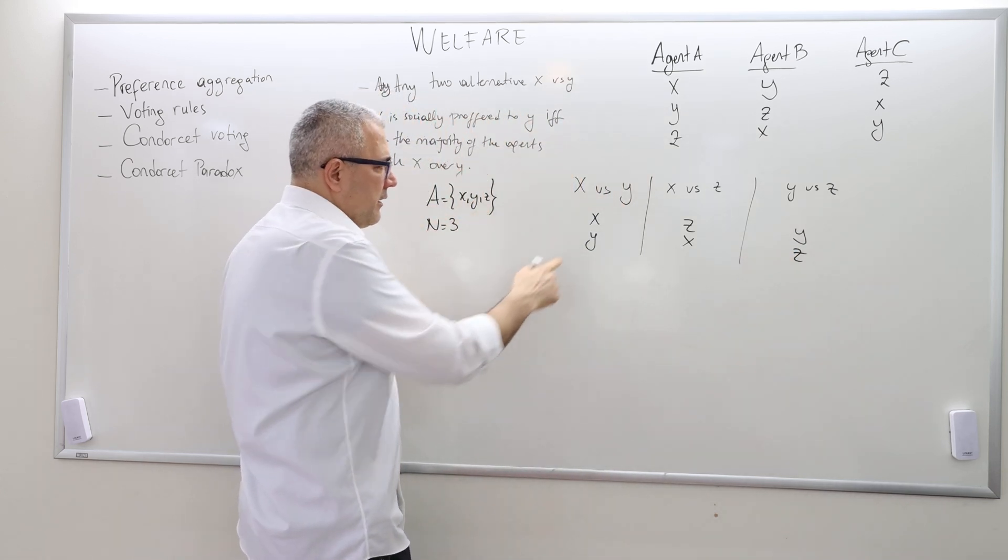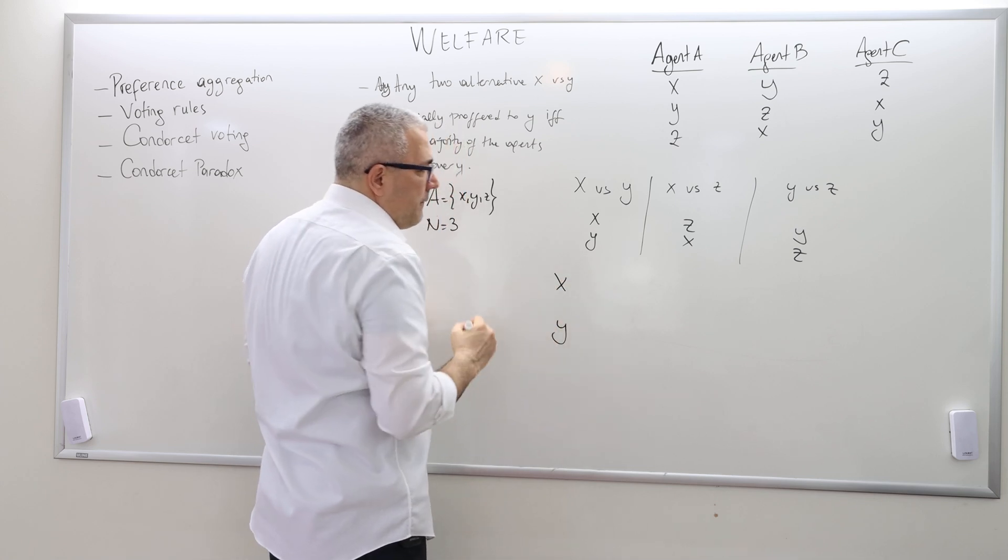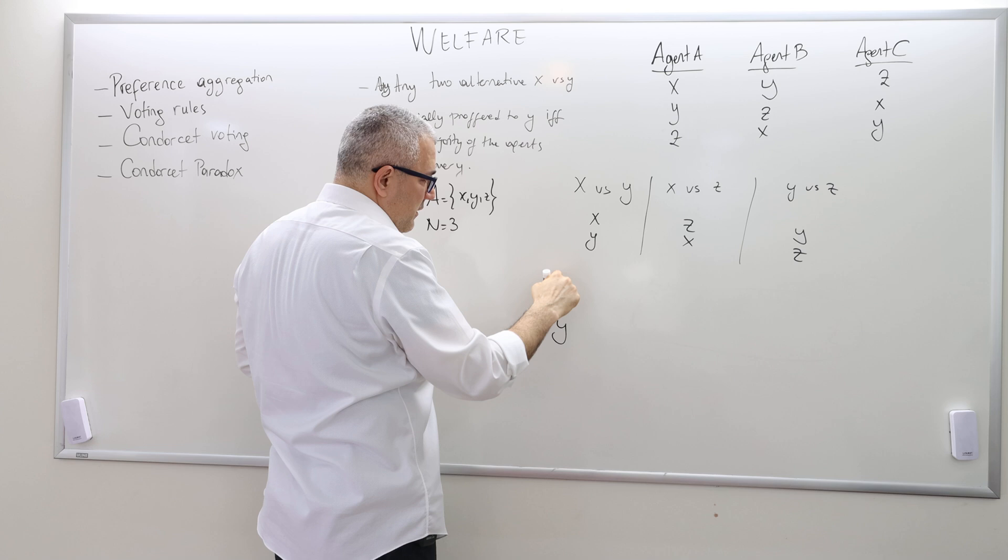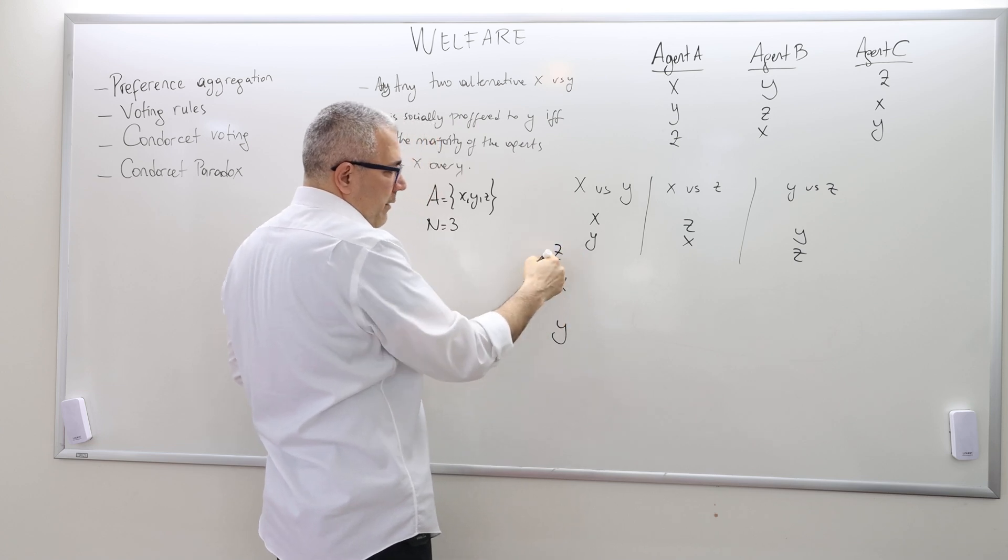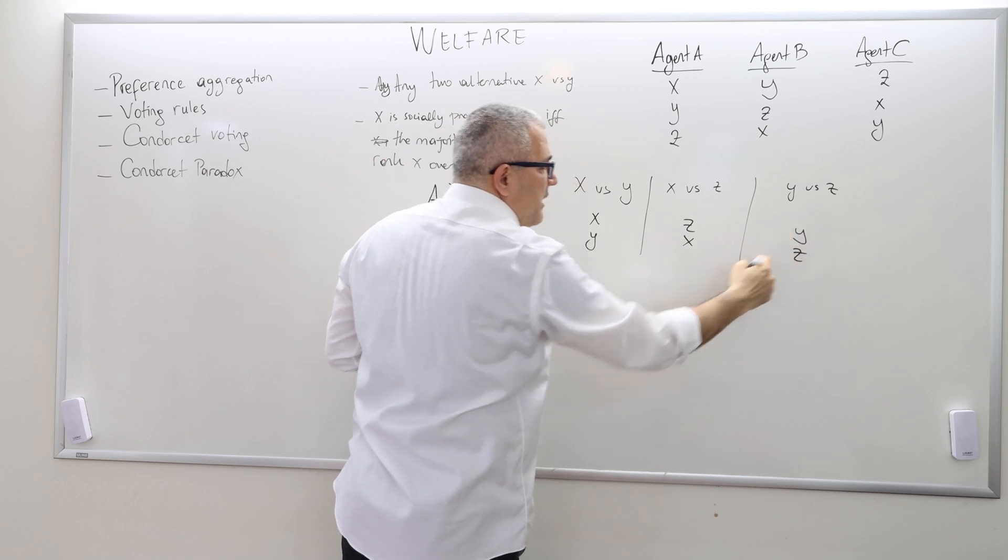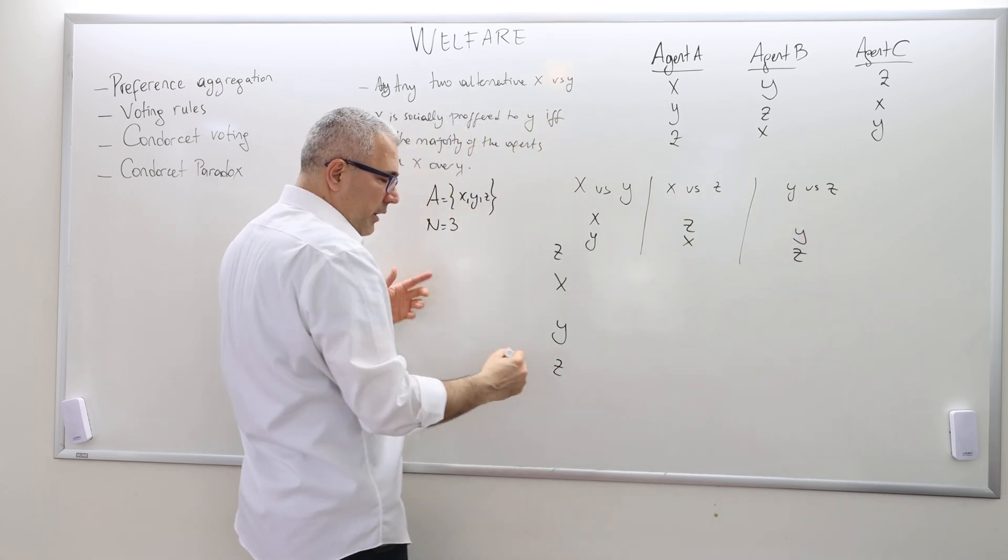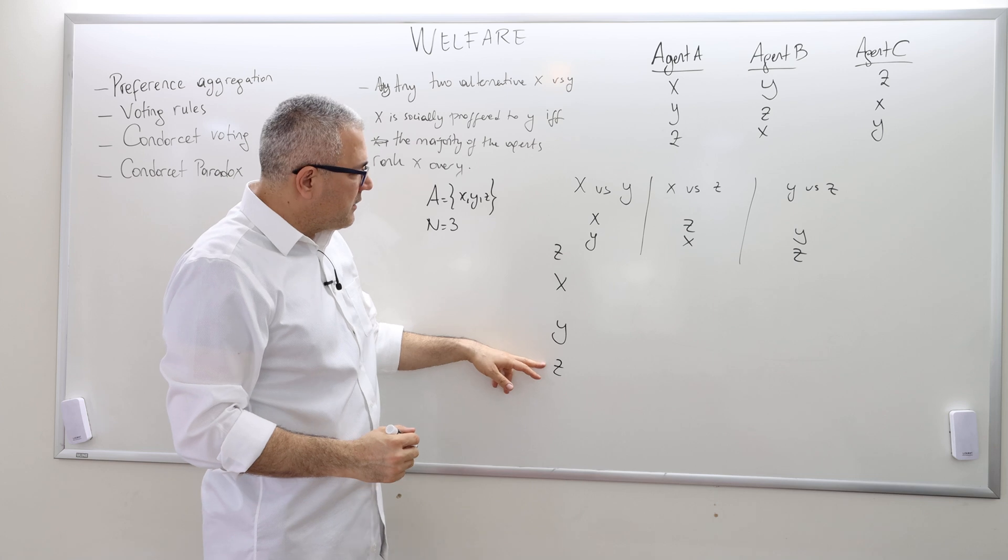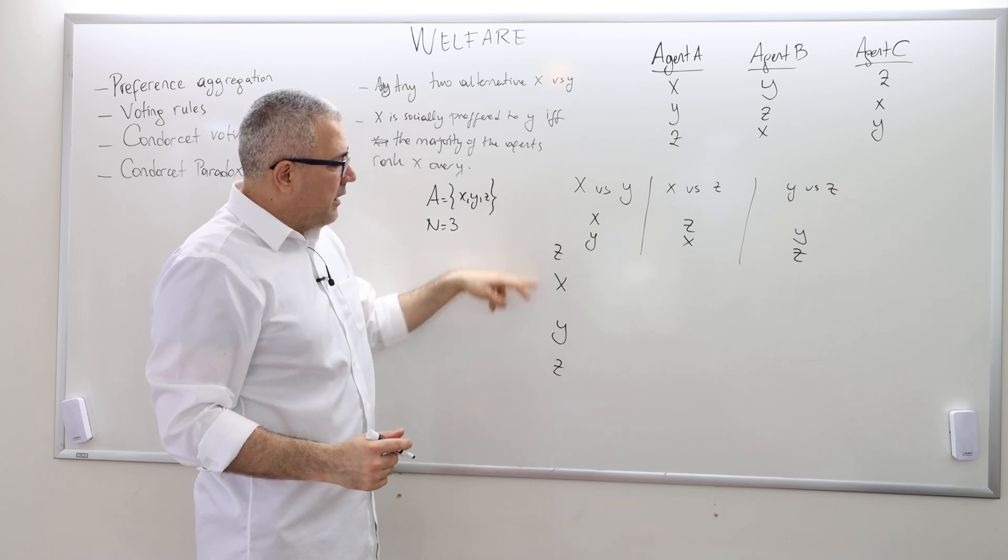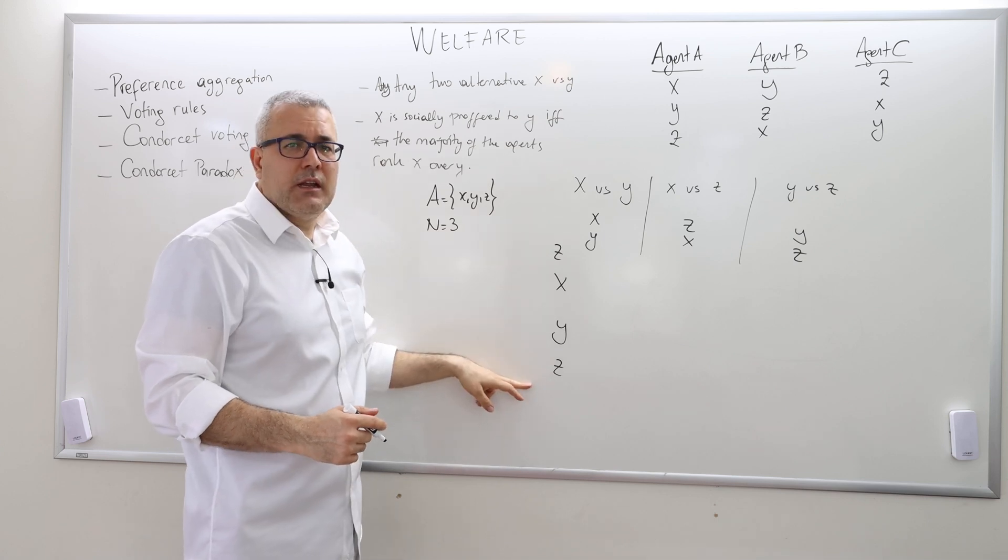So now let's bring them together. According to this conclusion, X should be above Y. And then according to this, Z should be above X. So therefore, Z should be above X. And it seems like Z should be above Y as well. But it says the opposite. Y should be above Z. So this is a problem because Z cannot be better than Y and at the same time worse than Y.